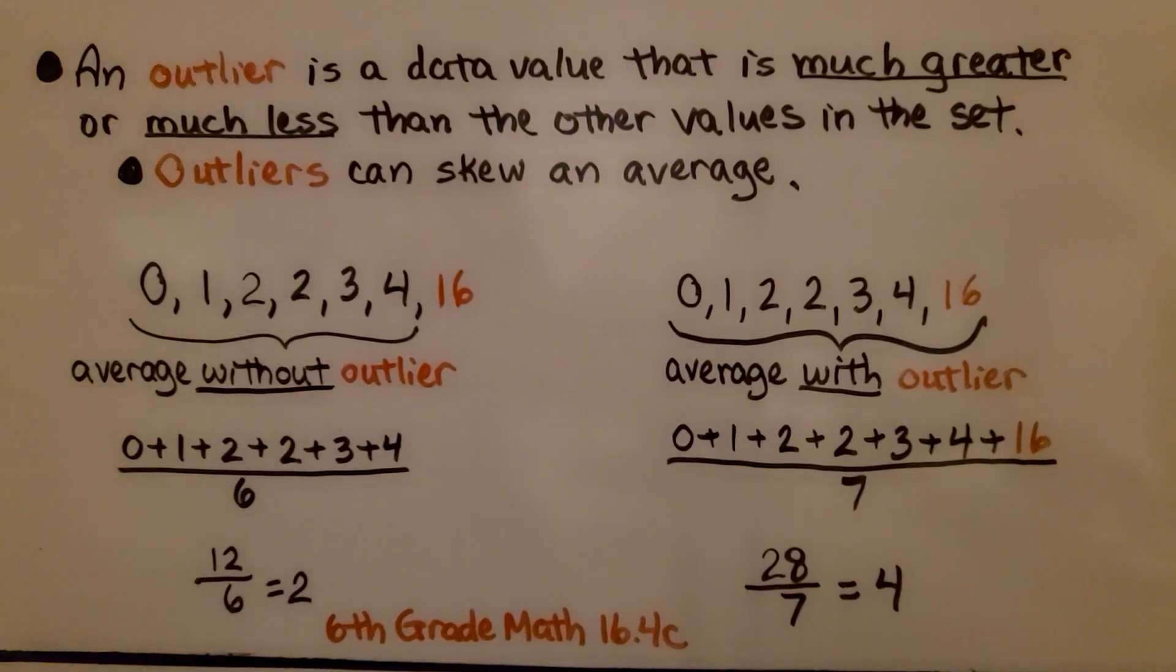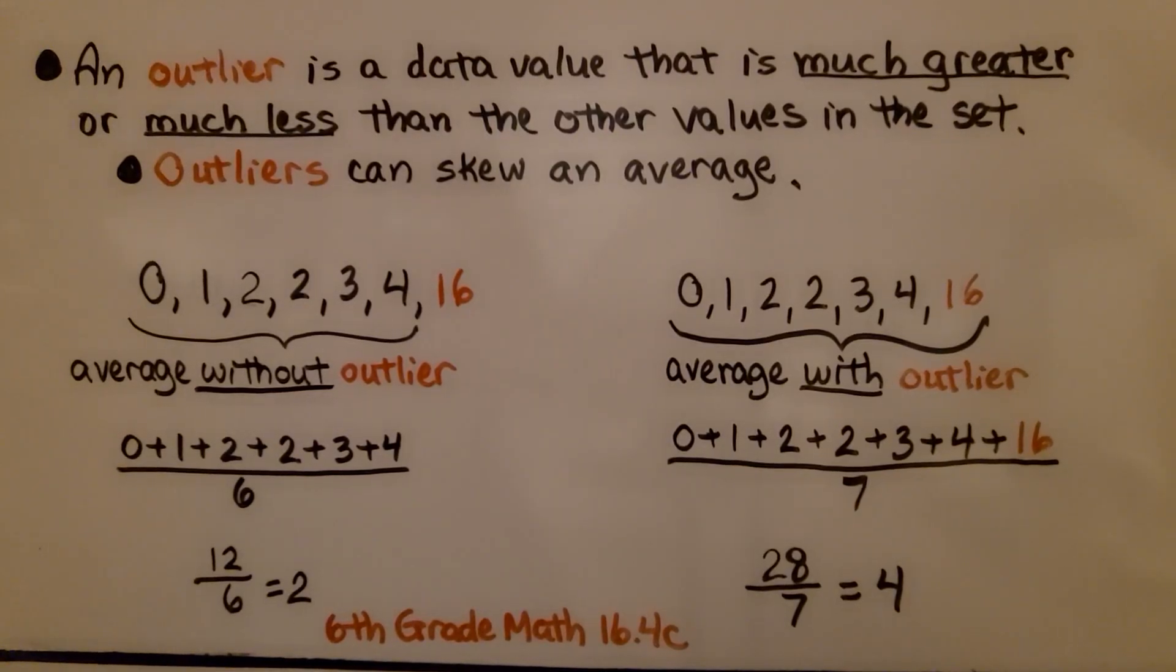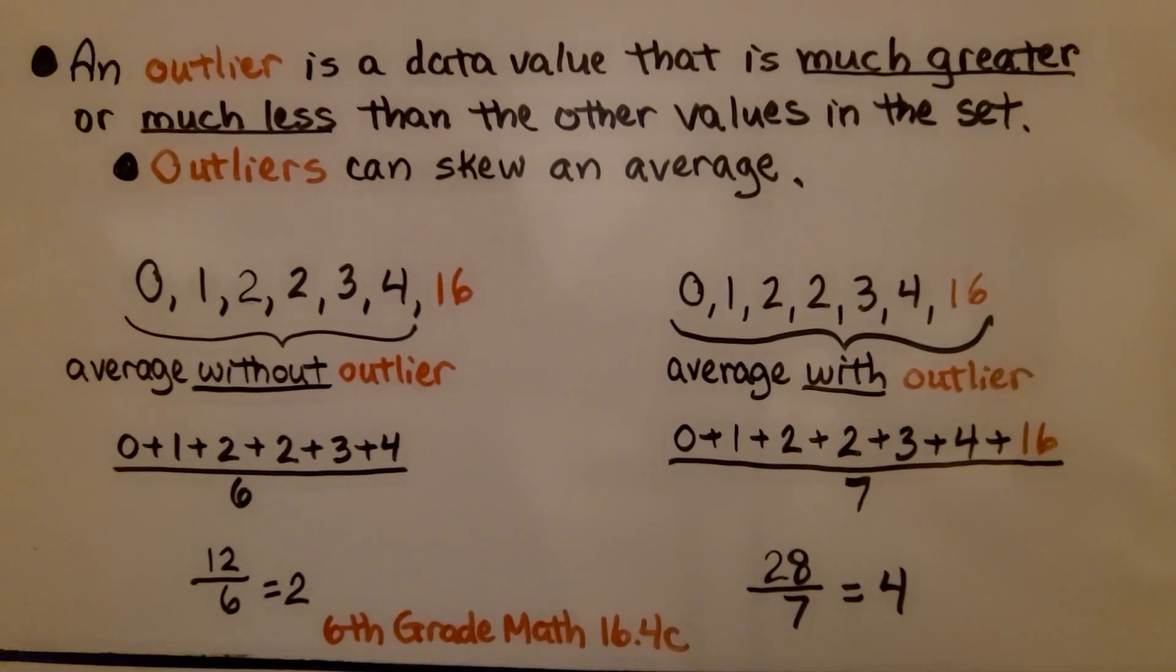I mentioned in a previous video that we learned about box plots and dot plots and interquartile ranges back in sixth grade math in chapter 16. In lesson 16.4c, we learned about outliers. An outlier is a data value that is much greater or much less than the other values in the set. Outliers can skew an average.